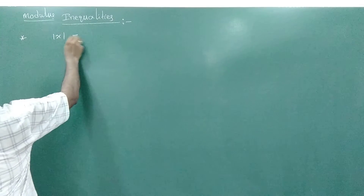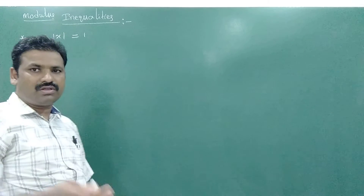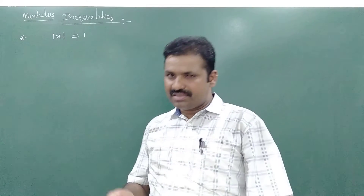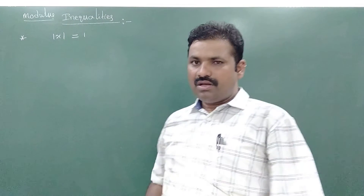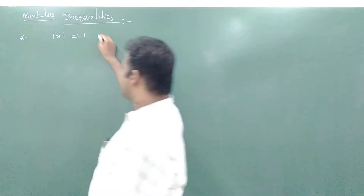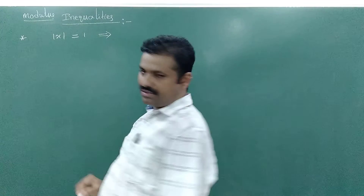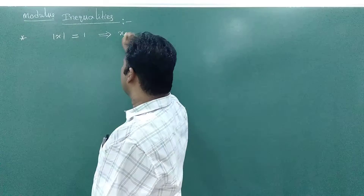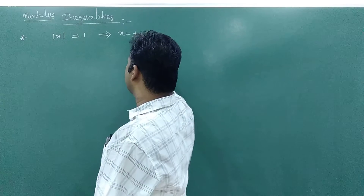First one: mod x equal to 1. What will happen when mod x equals 1? What are the values satisfying this? Mod of 1 is also 1, and mod of minus 1 is also 1. So the real values satisfying this equation are x equal to plus or minus 1.